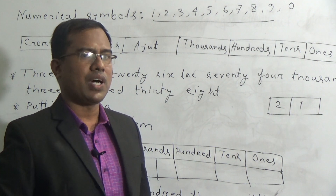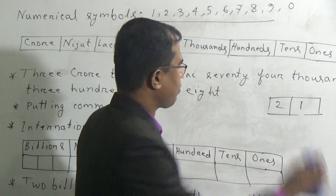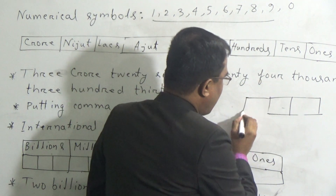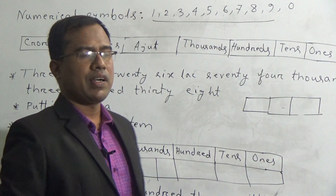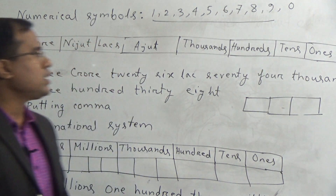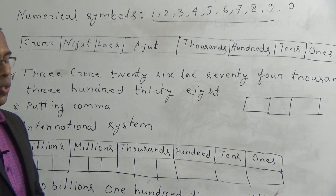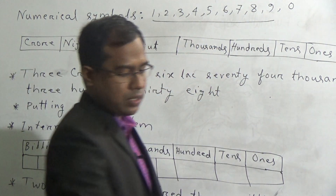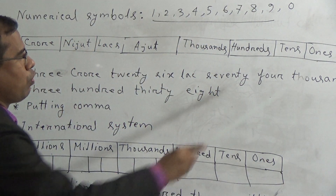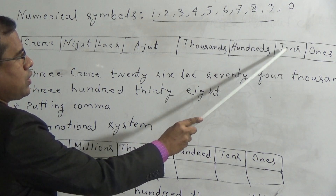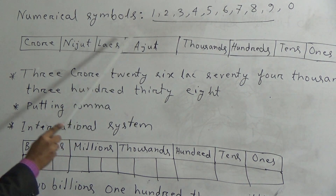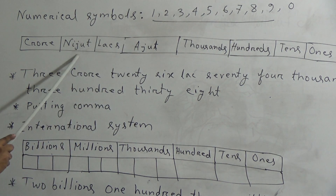If we want to express 100, then we have to take another place, which is called the 100s place. In mathematics, for expressing large numbers, we normally use a total of 8 places. The names of the places are: 1s place, 10s place, 100s place, 1000s place, ten-thousands place, hundred-thousands place, ten-lakhs place, and crore place.